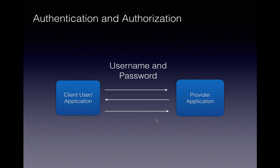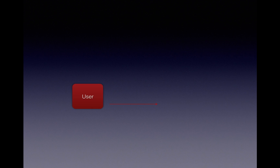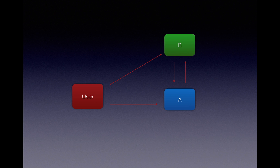OAuth is an authentication and authorization standard which allows an application to gain access to a user's data within another application without knowing the user's user ID and password for the second application. Here the user is using application A, and application A wants to get some data which application B has, which is for the user.